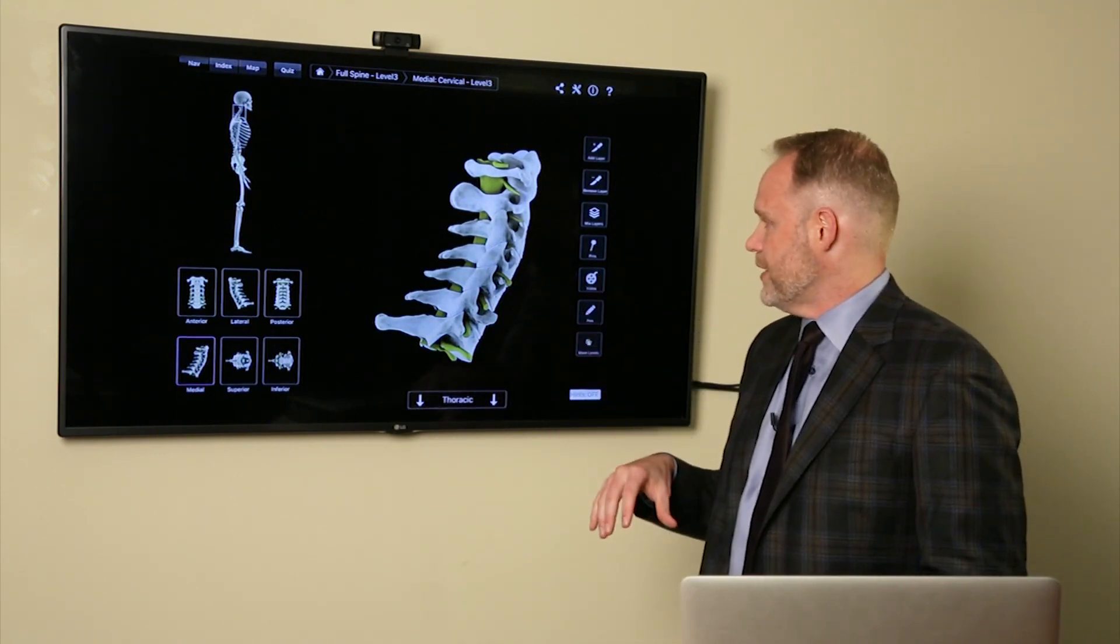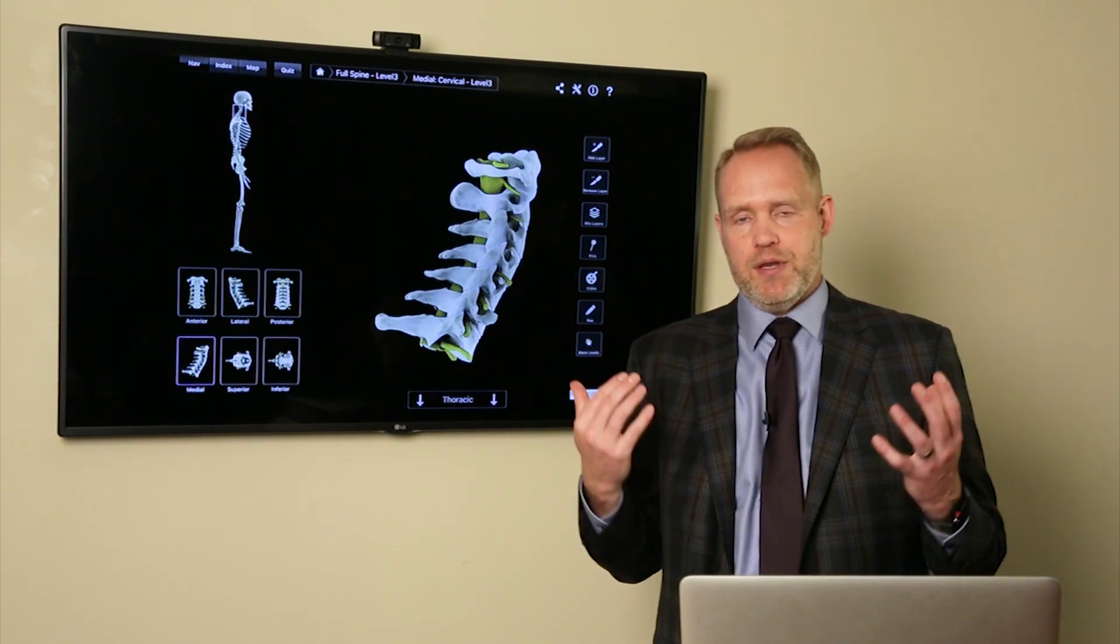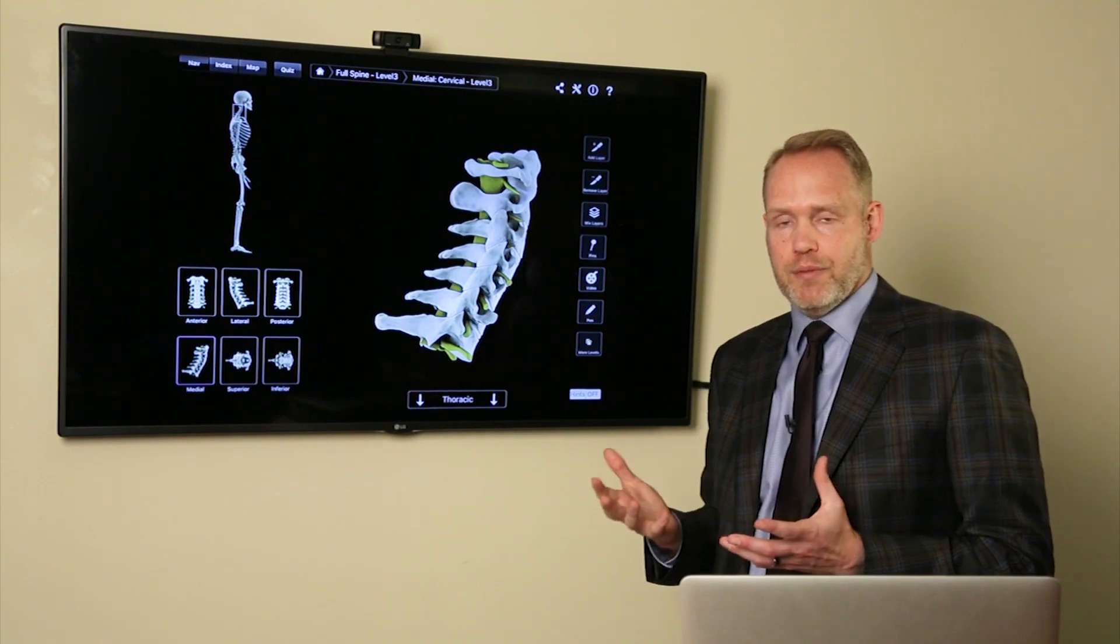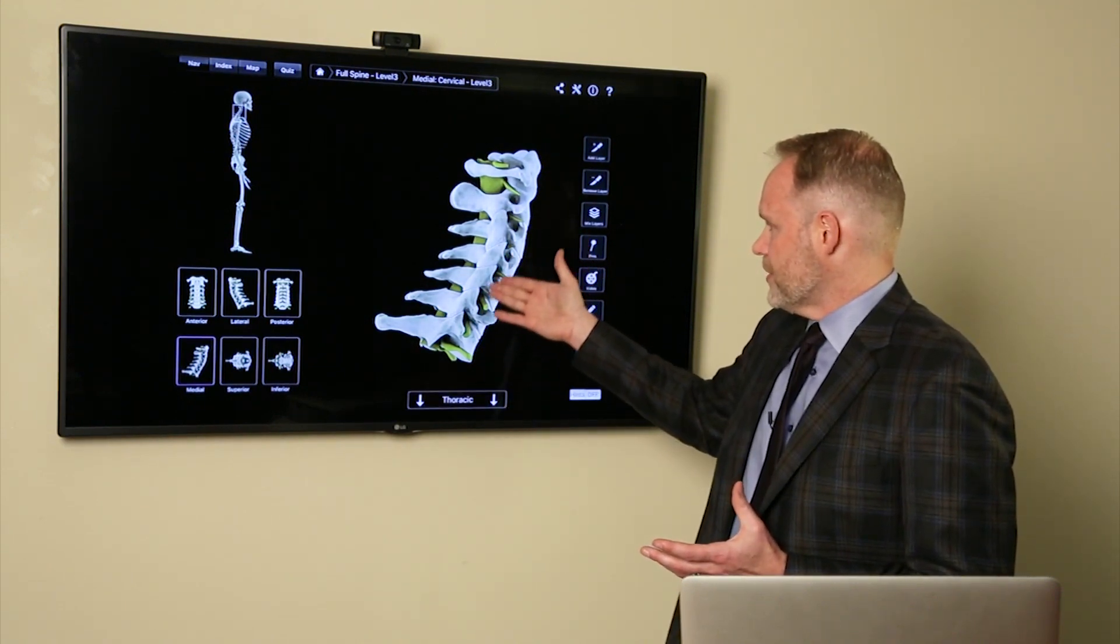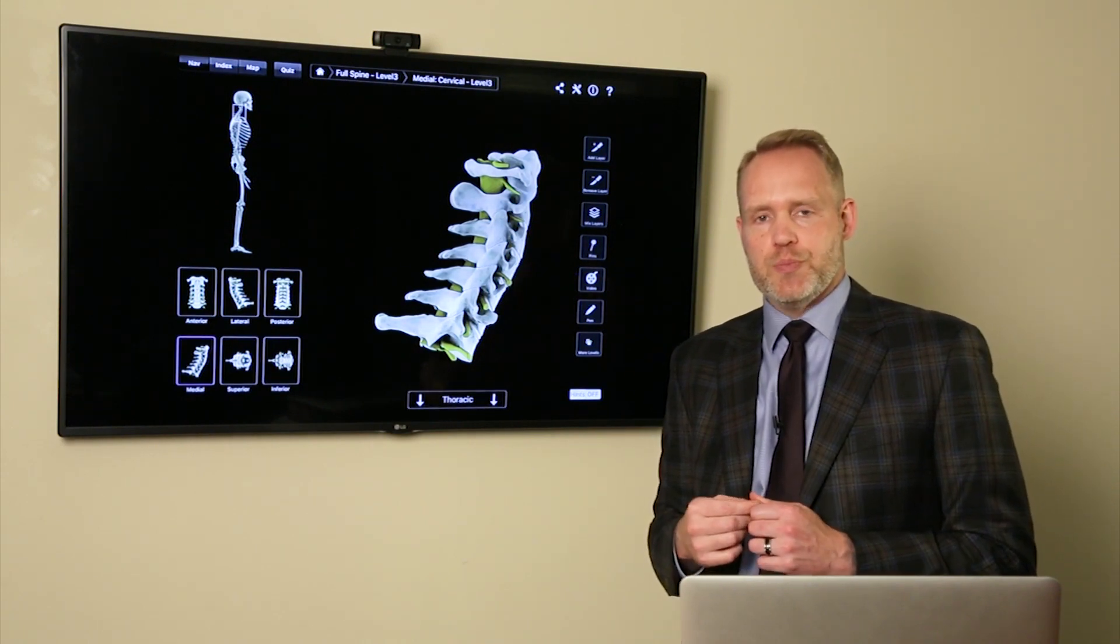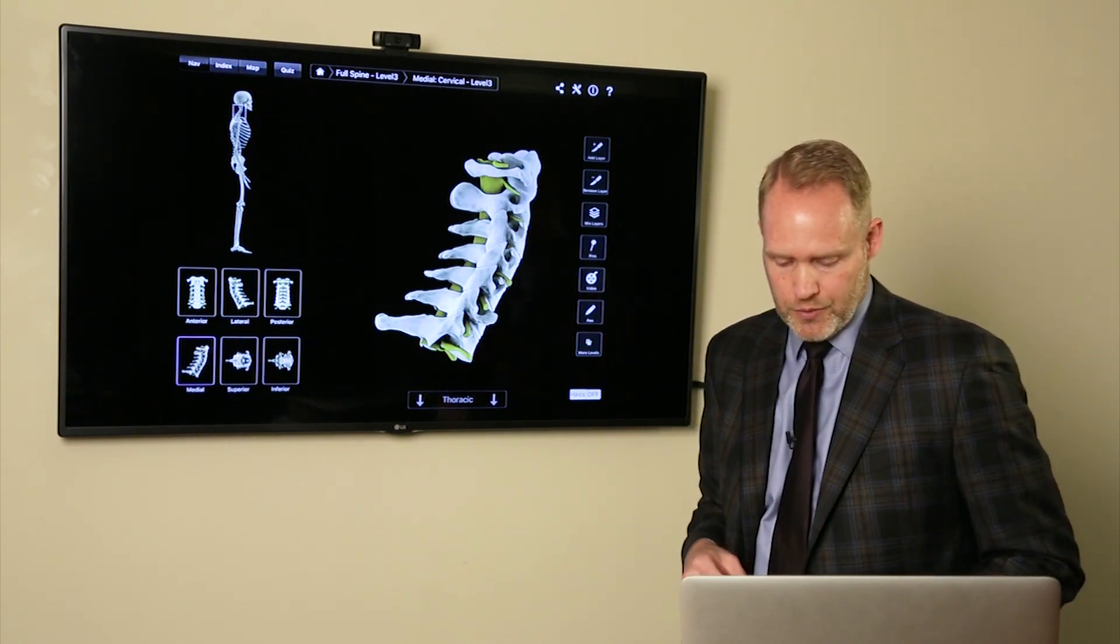But the facet joints essentially keep the spine, keep the neck from hyperextending and damaging the spinal cord. The problem though, is that there's a lot of pressure placed in the facet joints if a sudden impact, for example, is experienced by the person.